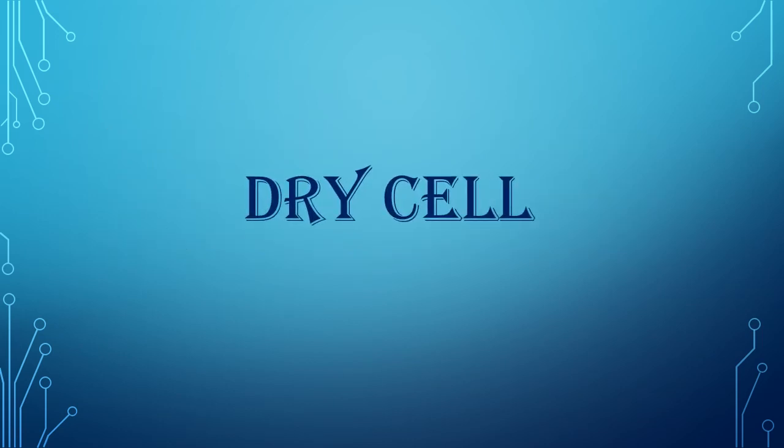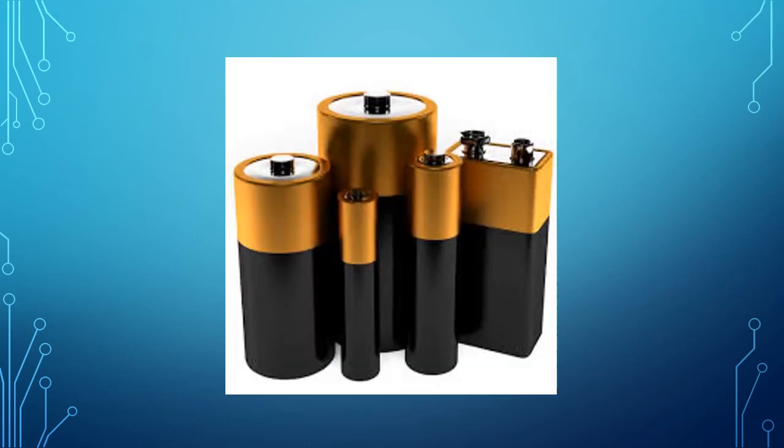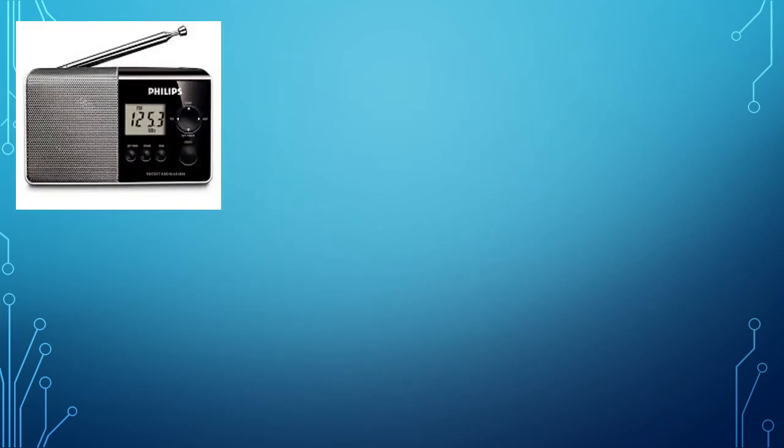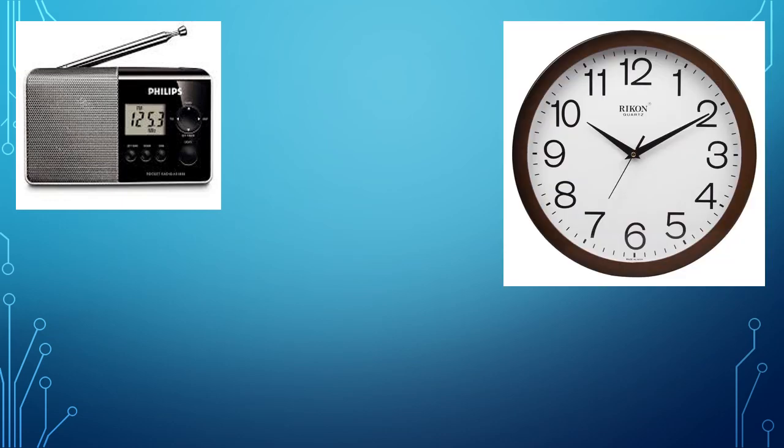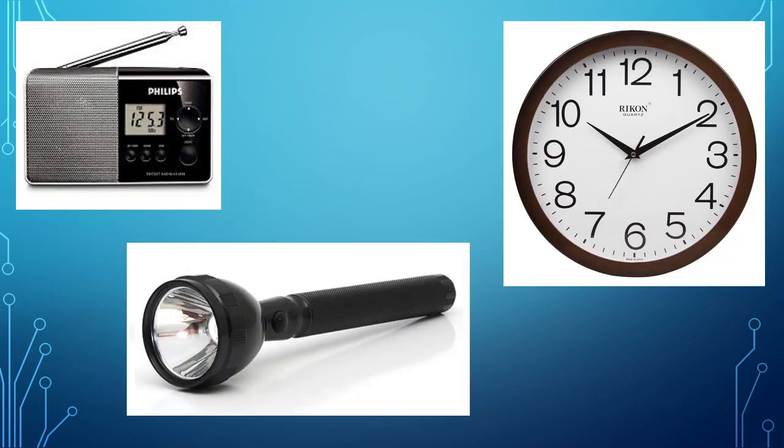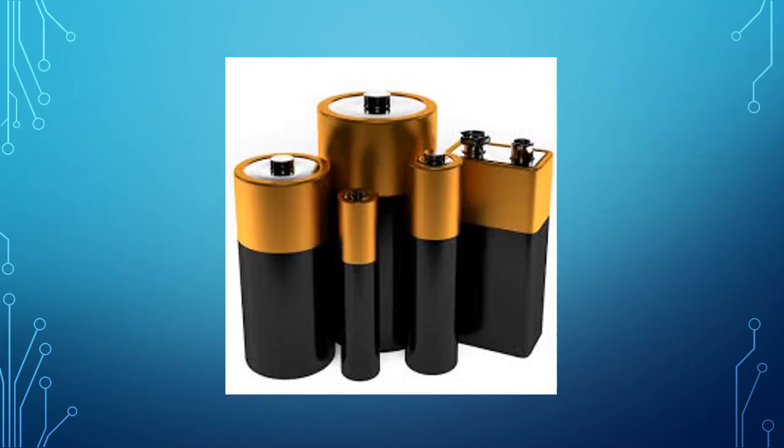Now let's learn something about dry cells. It looks something like this, students. We all have seen this. The dry cells are used in radio sets, wall clocks, torches etc. These are available in 3-4 sizes.